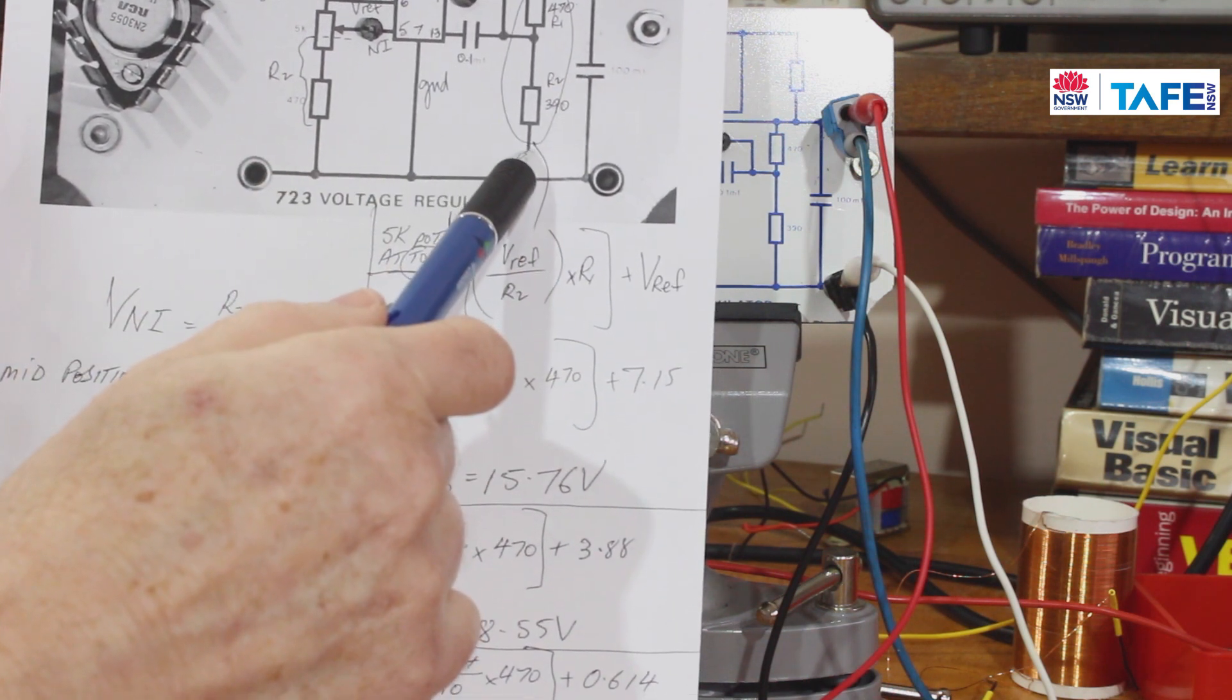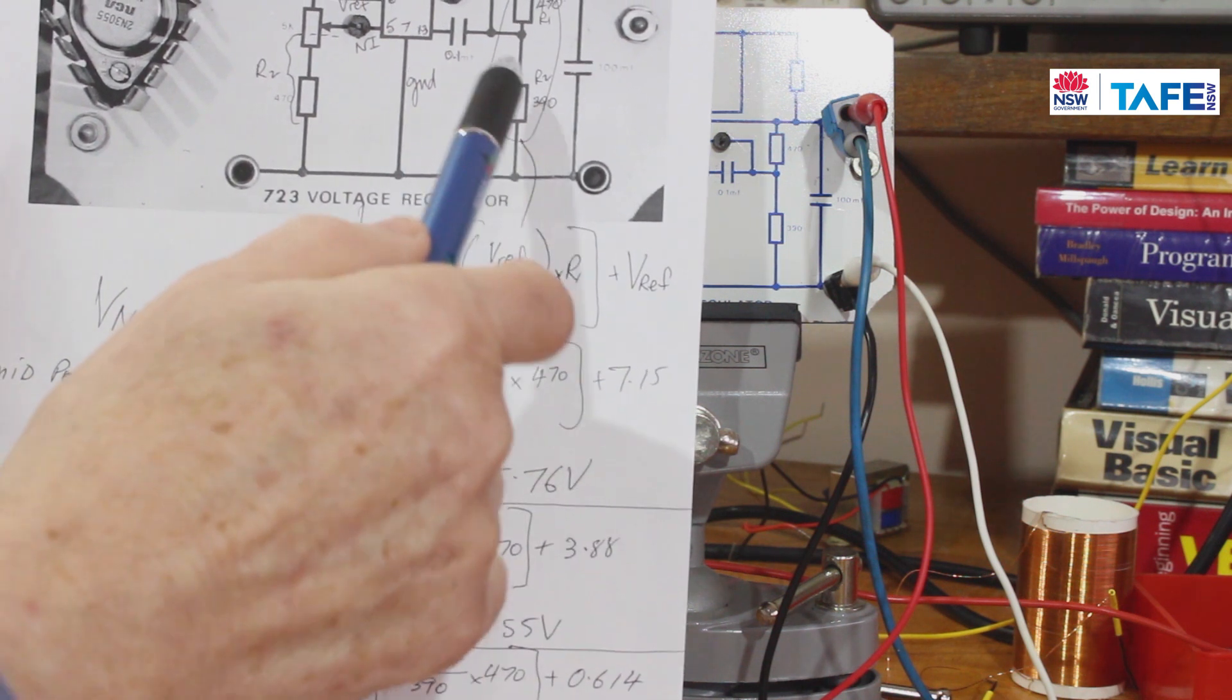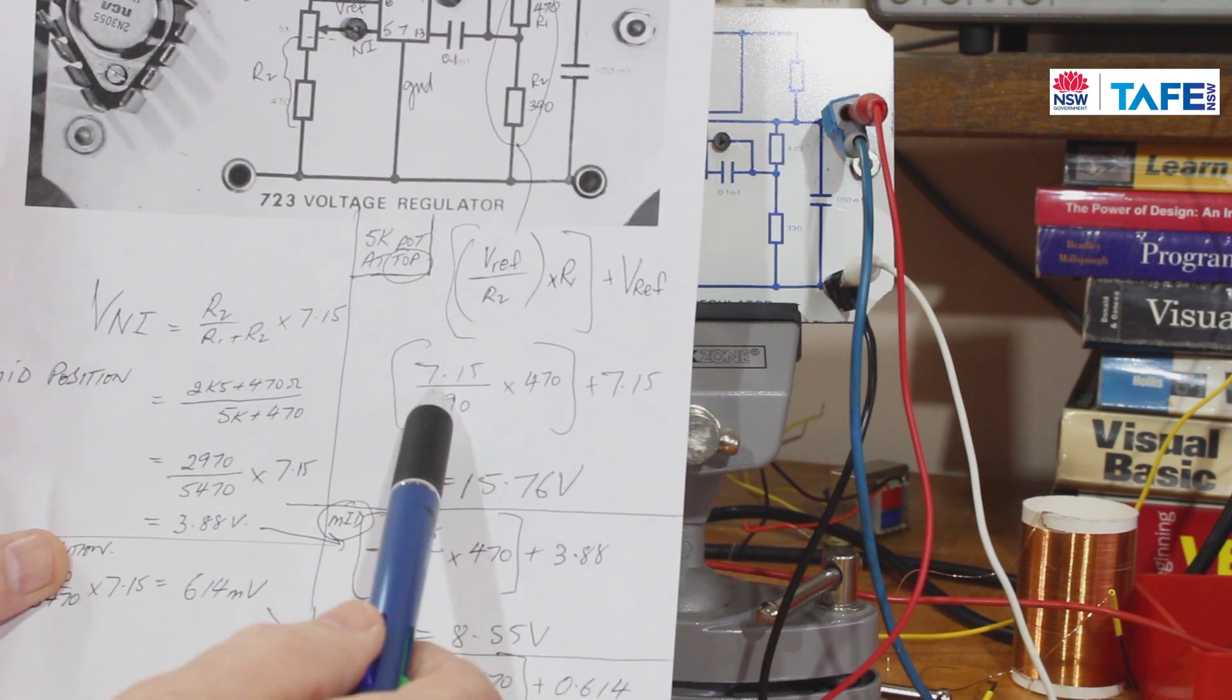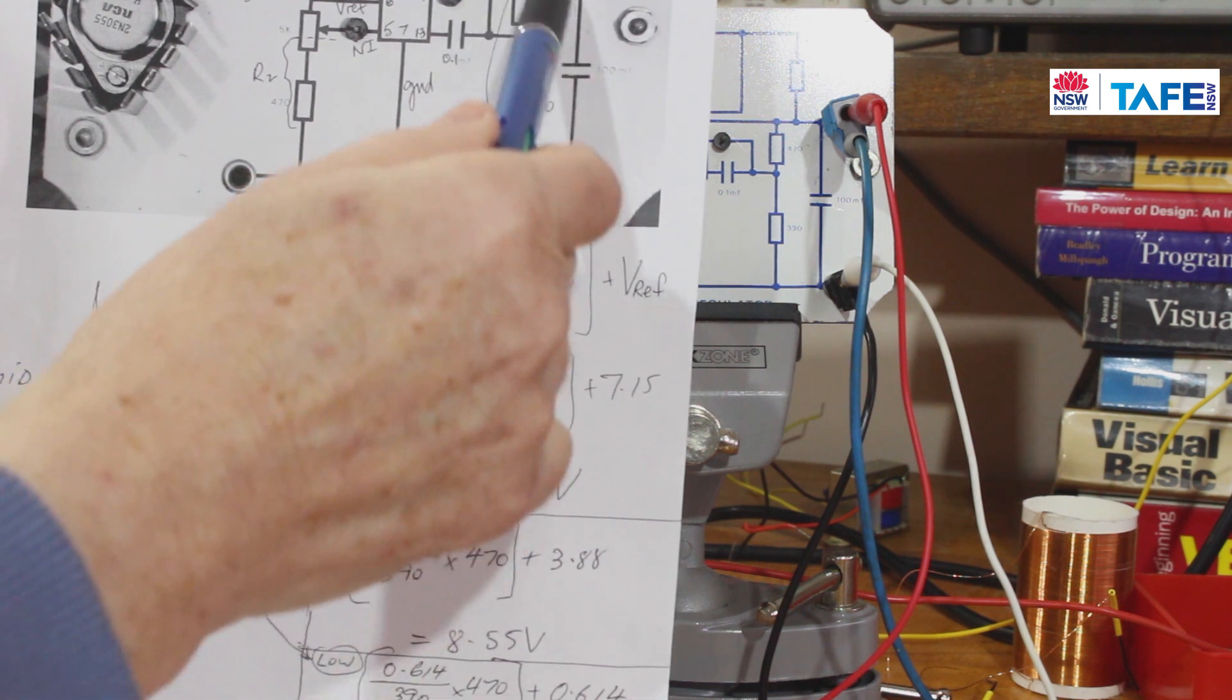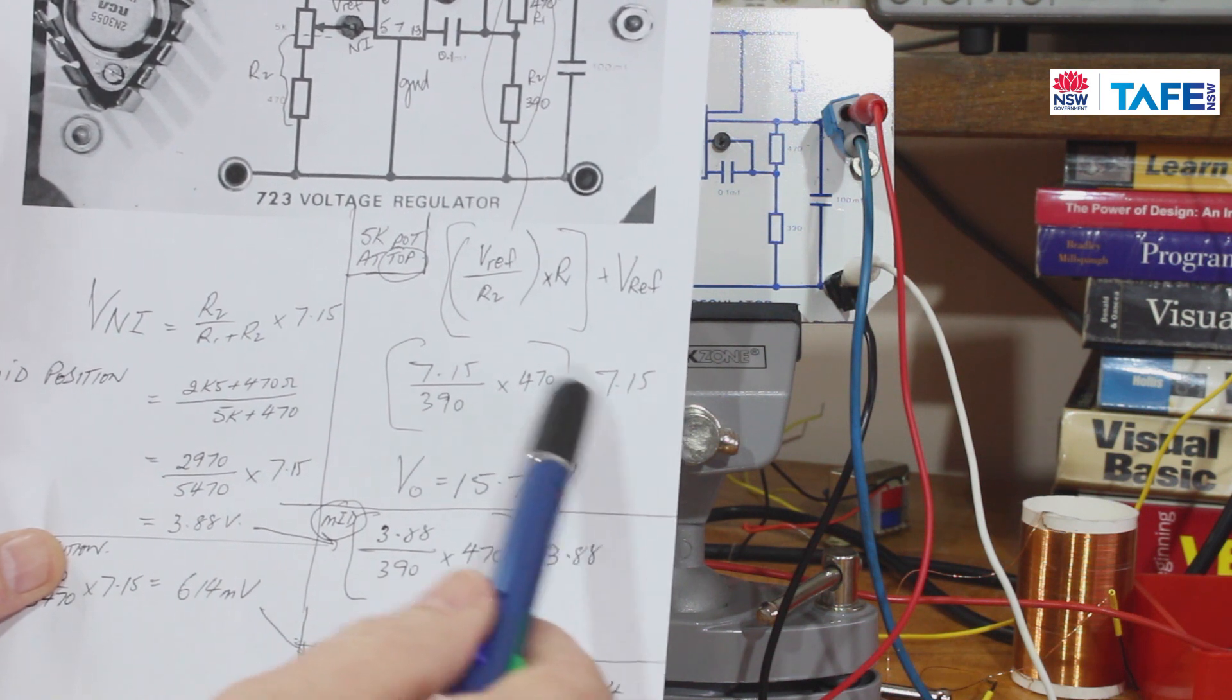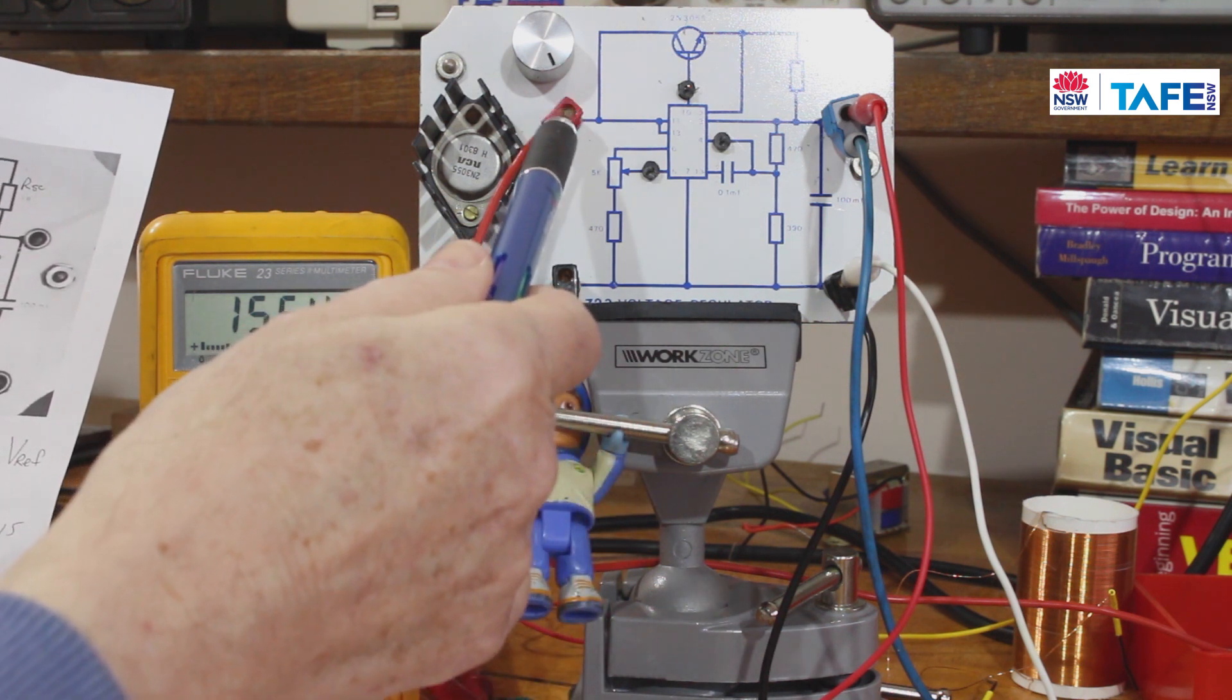Therefore that voltage is running a current down through the 390 ohm resistor, causing a voltage drop across the 390 ohm resistor. So 7.15 divided by 390, that gives me a current. Because we've got two resistors in series, Kirchhoff's current law says that the current through R1 is the same as the current through R2. So therefore I can multiply this current by the top resistor, 470 ohms. That's going to give me a voltage drop across that resistor. Now I already knew the voltage across that was 7.15 volts, so I can go ahead and add that 7.15 volts to that, giving me an output voltage of 15.76 volts.